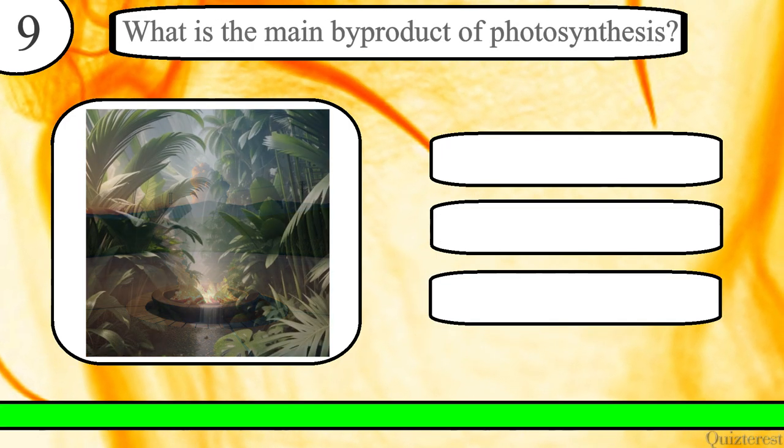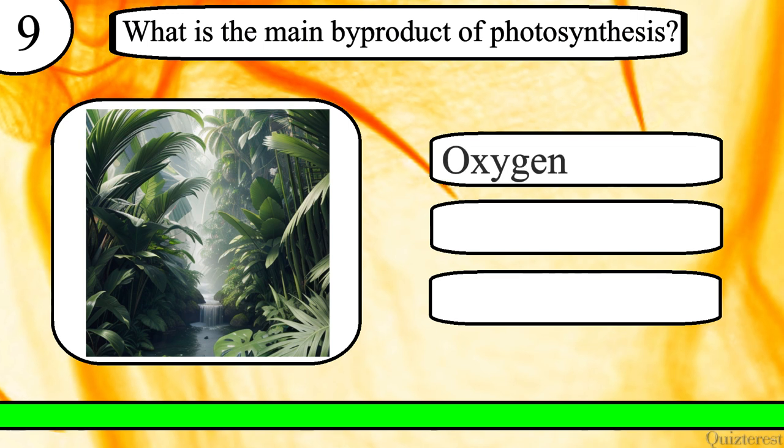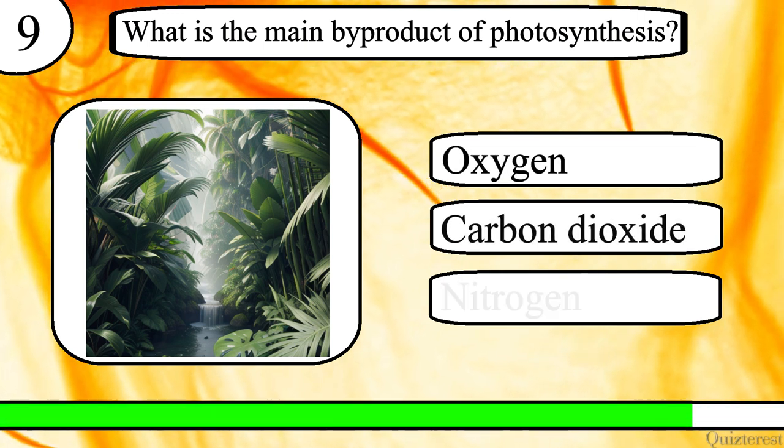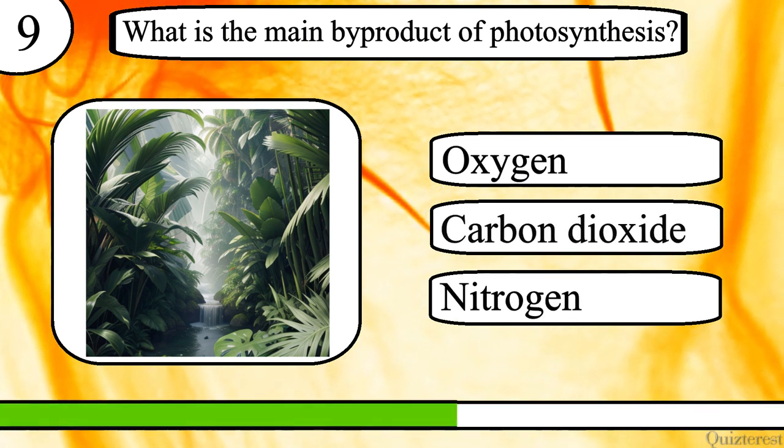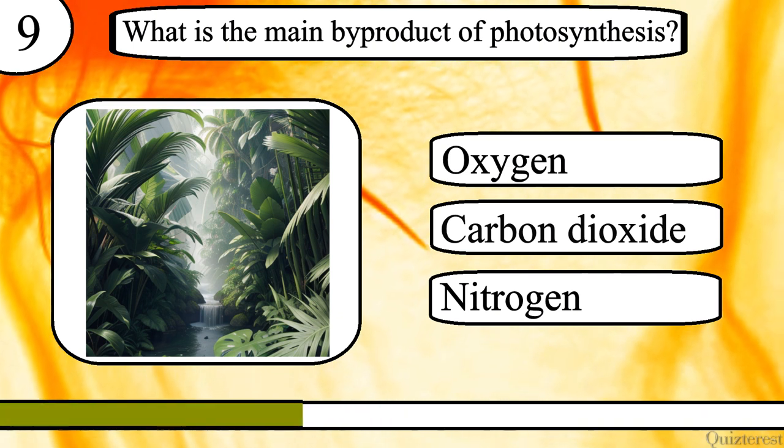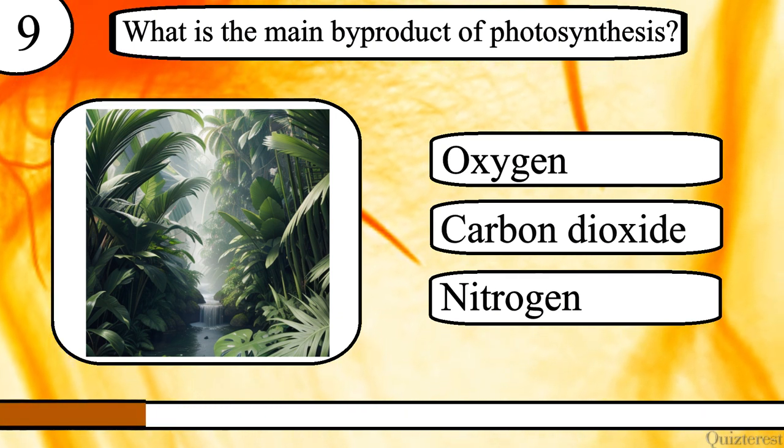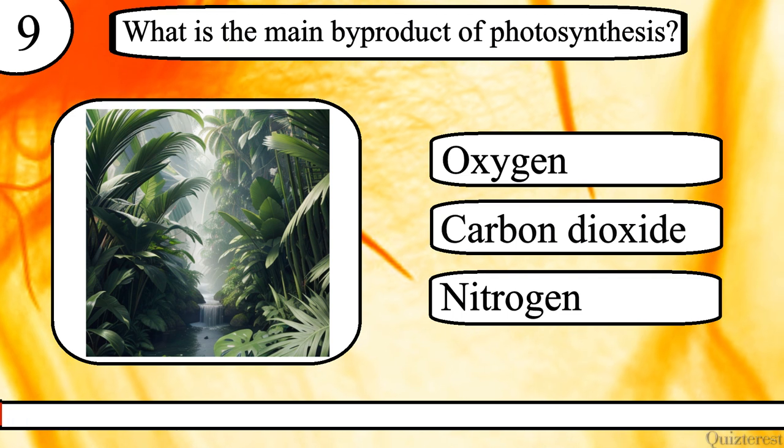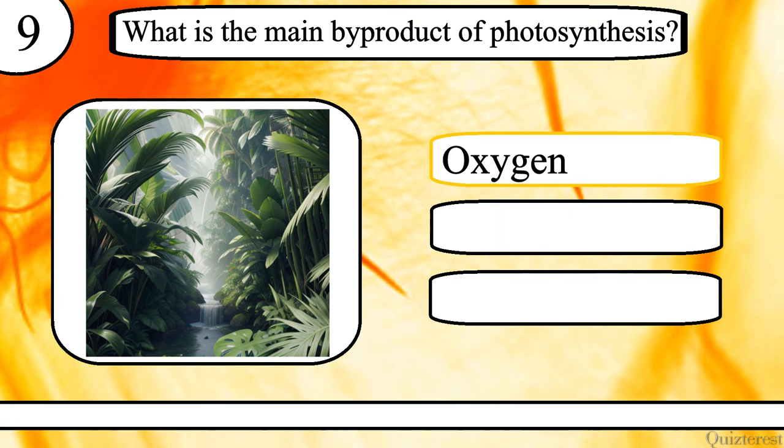Question 9. What is the main by-product of photosynthesis? Oxygen, carbon dioxide, or nitrogen? The correct answer is oxygen.